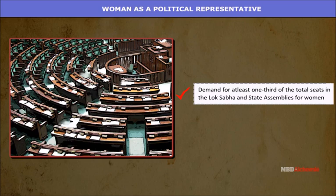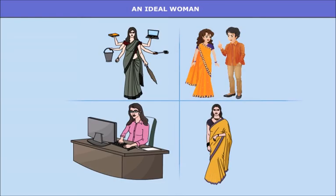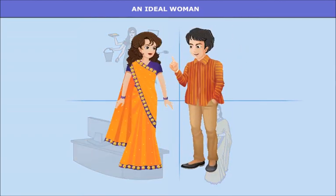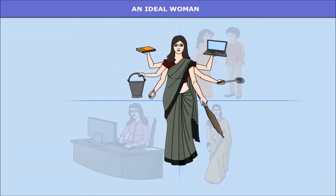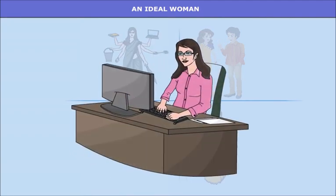Women's organizations demand at least one-third of the total seats in the Lok Sabha and state assemblies for women. However, a bill proposal has been pending before the parliament for more than a decade regarding the same. In today's world, women are multitasking — an ideal listener, an ideal beauty, an ideal housewife, and an ideal employee.